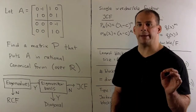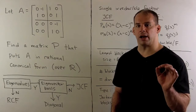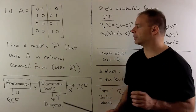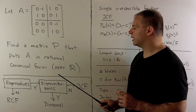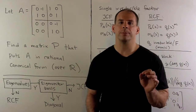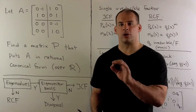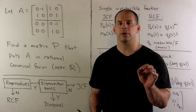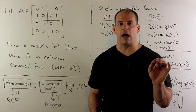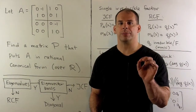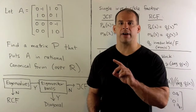We want to find a matrix P that puts A in rational canonical form over the reals. The big picture: we find the characteristic polynomial of A, we factor that characteristic polynomial, find the zeros, and call those eigenvalues.